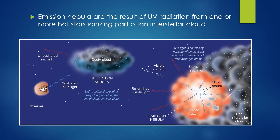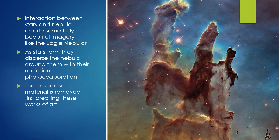Emission nebulae are the result of UV radiation from one or more hot stars ionizing part of an interstellar cloud. Red light is emitted by a nebula when electrons and protons recombine to form hydrogen atoms. We also have visible starlight re-emitted as visible light and a dusty cloud creating a reflection. So we have scattered blue light coming at us and unscattered red light going off — if it's not along our line of sight it will look bluer, and if it is along our line of sight it's going to look redder.